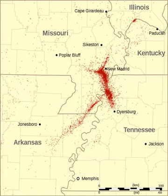Relatively few earthquakes occur in intraplate environments; most occur on faults near plate margins. Intraplate earthquakes do not occur near plate boundaries, but along faults in the normally stable interior of plates. These earthquakes often occur at the location of ancient failed rifts, because such old structures may present a weakness in the crust where it can easily slip to accommodate regional tectonic strain.